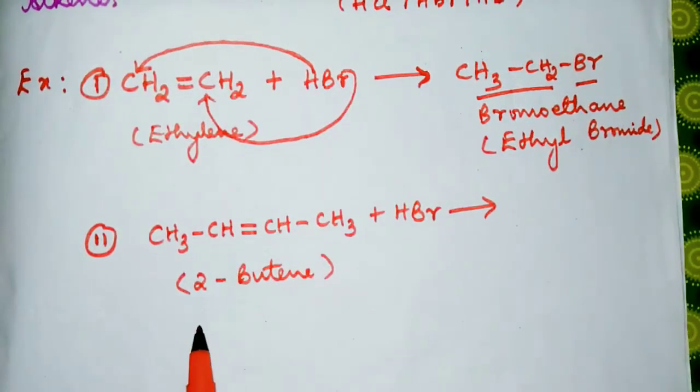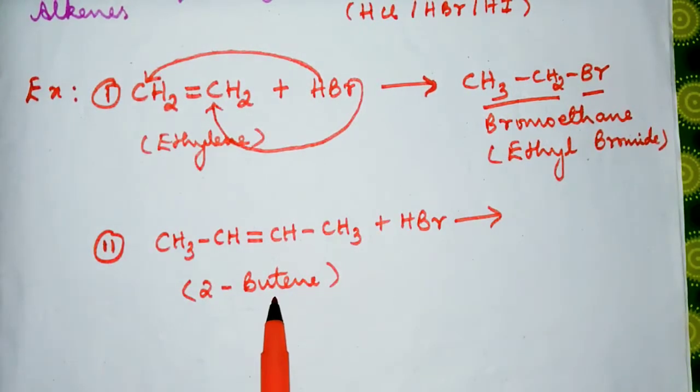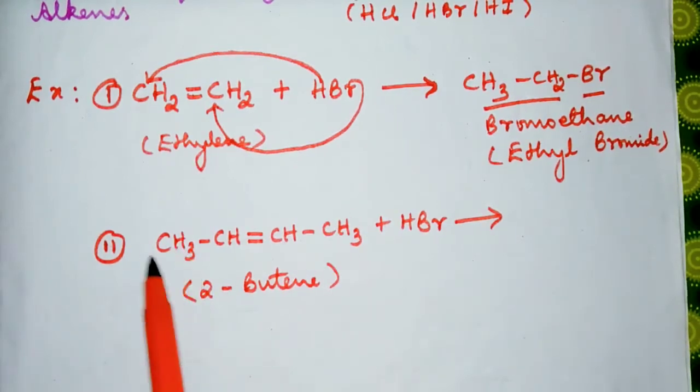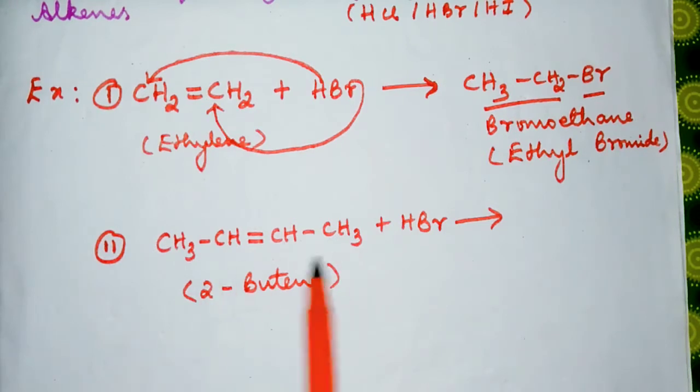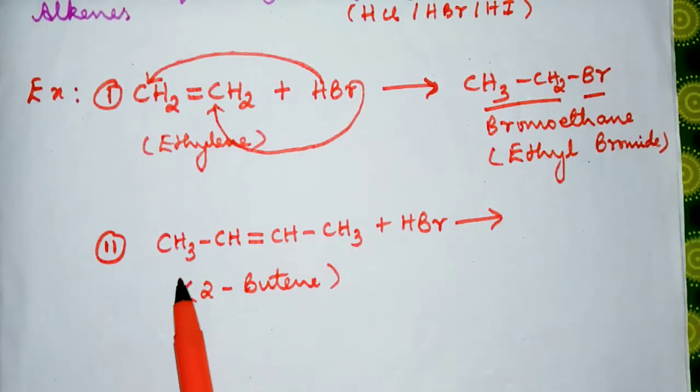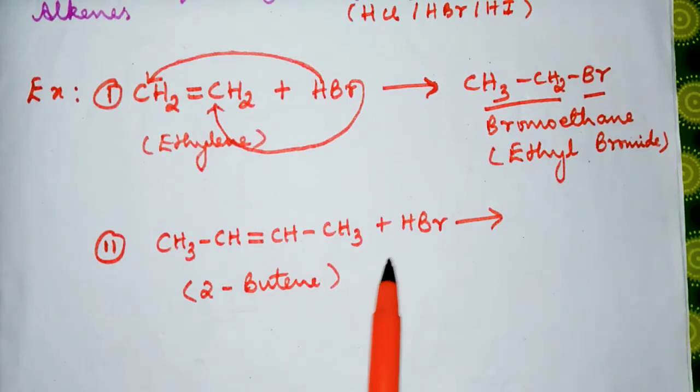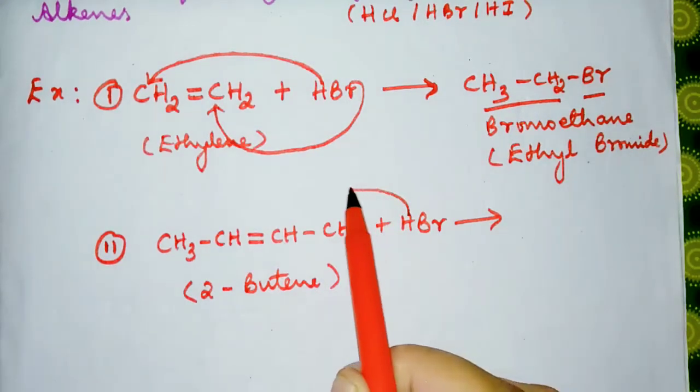This is 2-butene. This one is a symmetrical alkene because the groups attached to this sp2 hybridized carbon are exactly the same, CH3 and CH3.